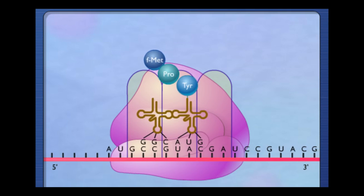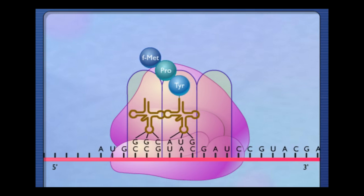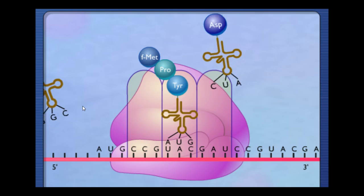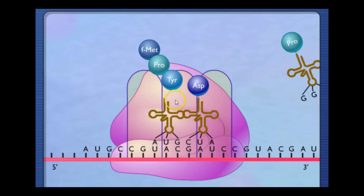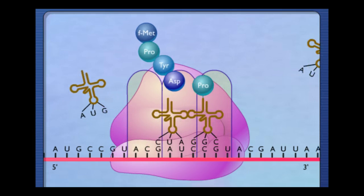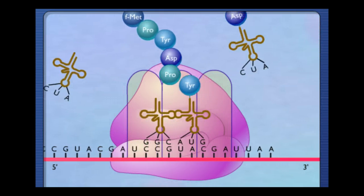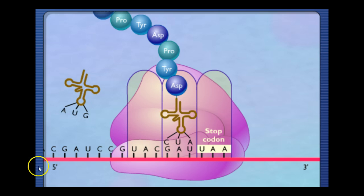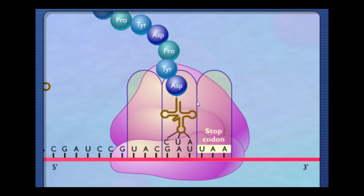Tyrosine is now bound to proline by a peptide bond. Here goes the tRNA and here comes the new one — you can see the whole process happening. Here's the building of a protein. Now we encounter the stop codon. This is how the ribosome — the rRNA — knows to stop binding these amino acids together.